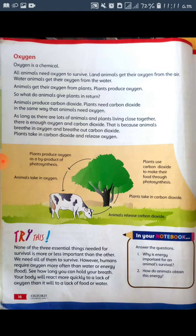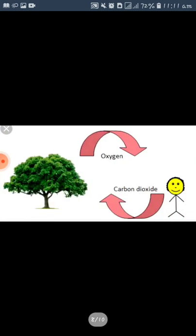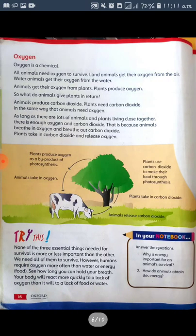So what do animals give to plants in return? Animals return carbon dioxide, which is very important for the photosynthesis process. We give carbon dioxide and plants give oxygen — this is a give-and-take cycle. Plants need carbon dioxide just like we need oxygen. As long as there are lots of animals and plants living close together, there is enough oxygen and carbon dioxide. Animals breathe in oxygen and breathe out carbon dioxide, and plants take in carbon dioxide and release oxygen.